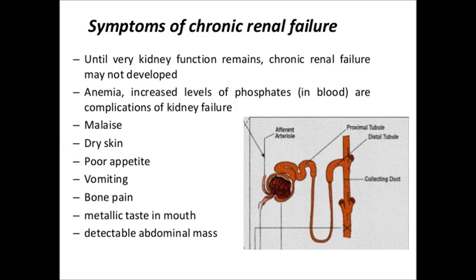The symptoms of chronic renal failure include anemia, increased level of phosphates in the blood, malaise, dry skin, poor appetite, vomiting, bone pain, metallic taste in the mouth — like when we have fever — and detectable abdominal mass. An ultrasonography may show some abnormalities or extra features in the kidney which can detect kidney failure.